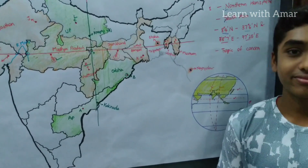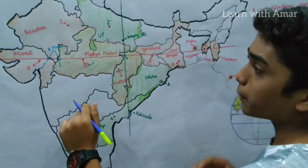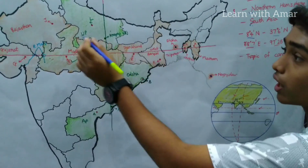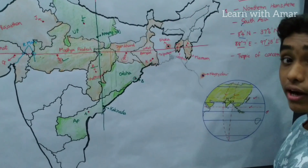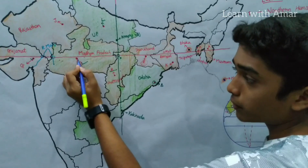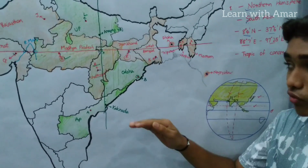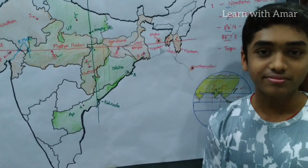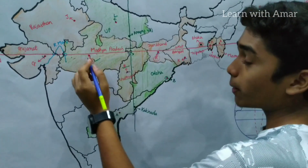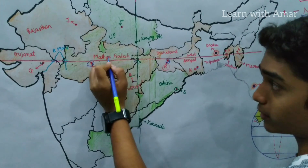Among these 8 states, which capital cities lie to the north of the Tropic of Cancer? Among the 8 capital cities, Jaipur of Rajasthan, Aizawl of Mizoram, and Agartala of Tripura lie to the north of the Tropic of Cancer. The remaining 5 states' capital cities — Gandhinagar of Gujarat, Bhopal of Madhya Pradesh, Raipur of Chhattisgarh, Ranchi of Jharkhand, and Kolkata of West Bengal — are situated to the south of the Tropic of Cancer. The 2 capital cities situated nearest to the Tropic of Cancer are Bhopal of Madhya Pradesh and Ranchi of Jharkhand.